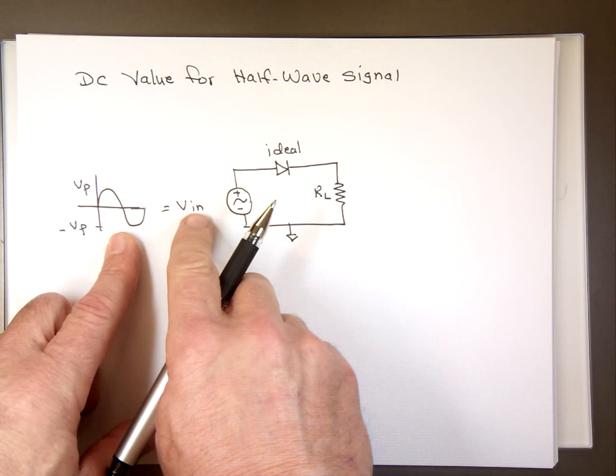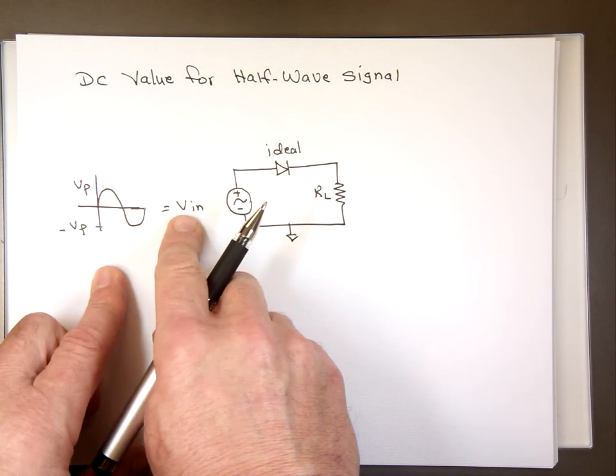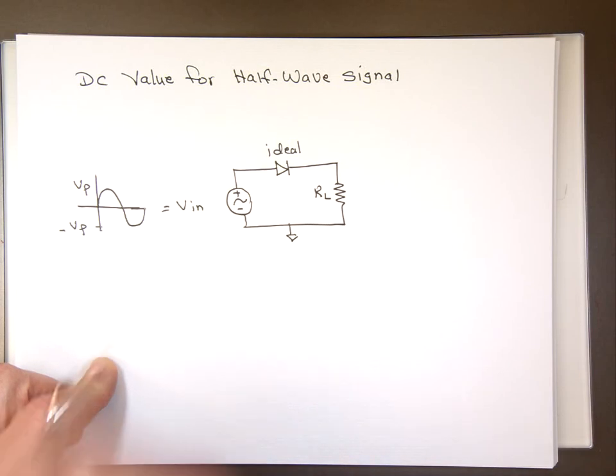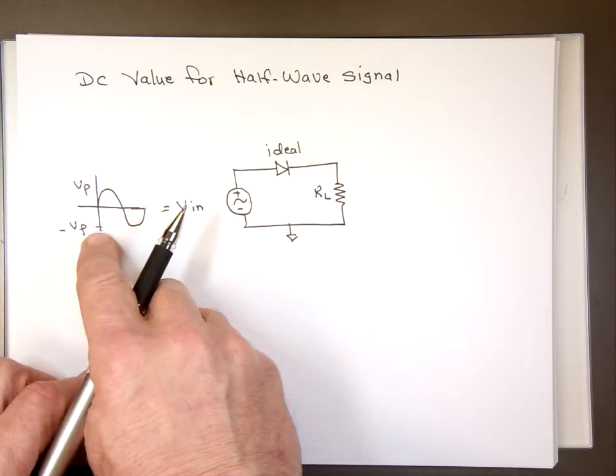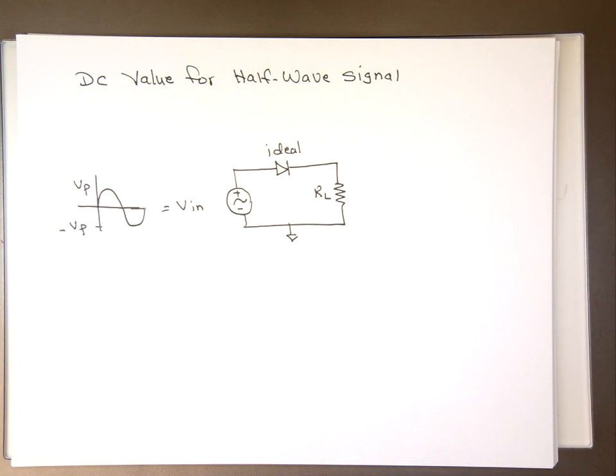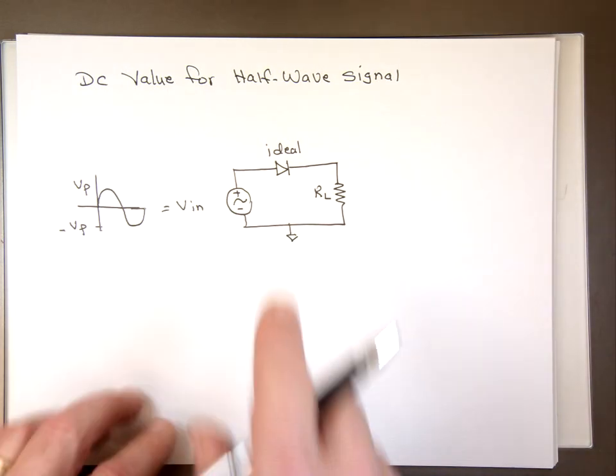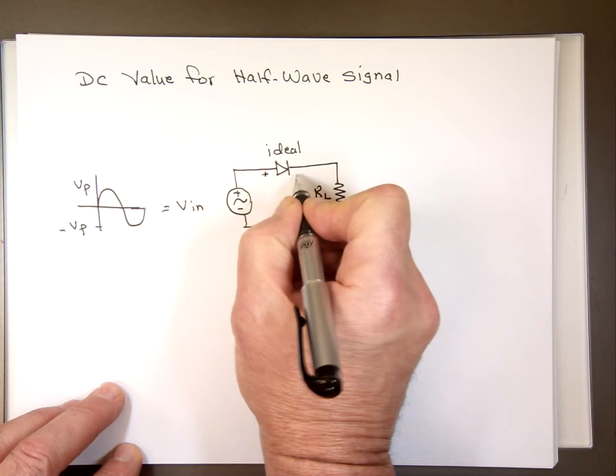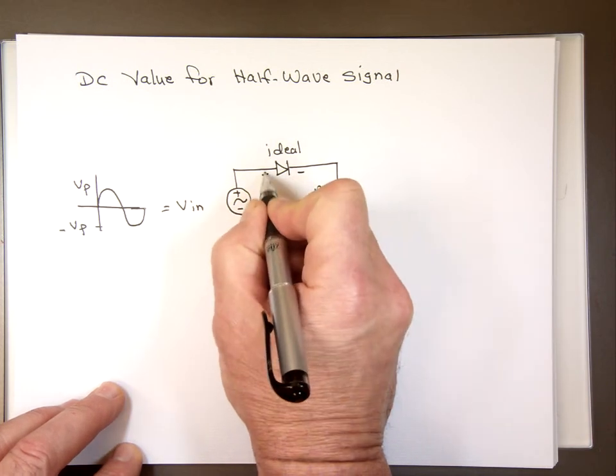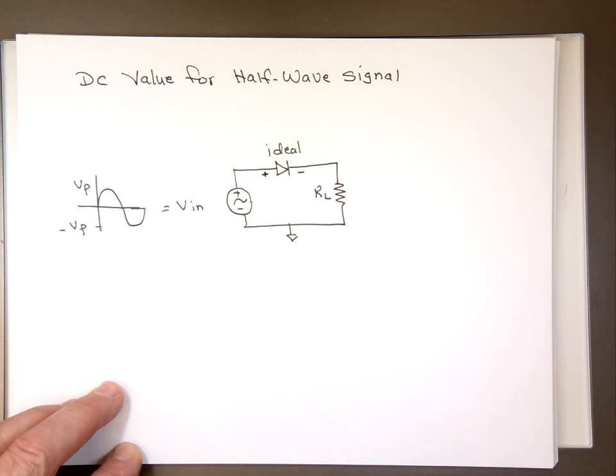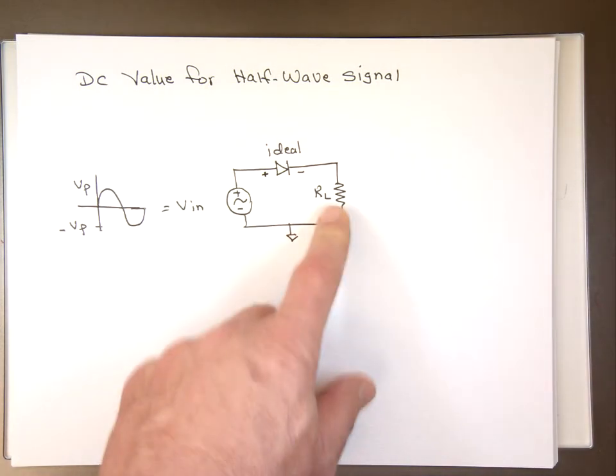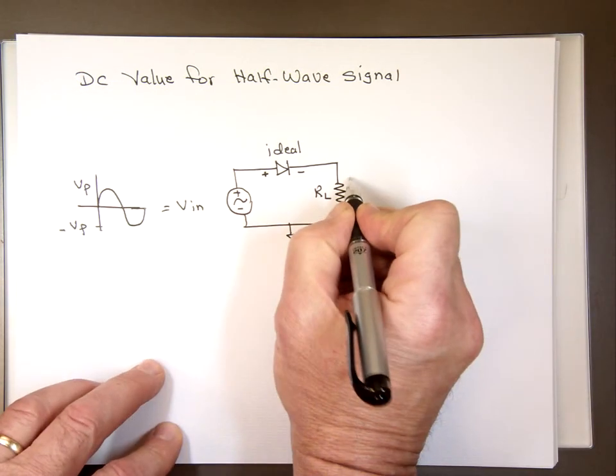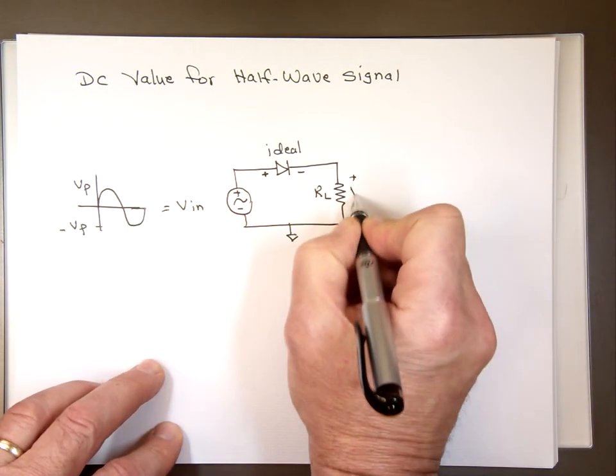Let's assume we have a source, the input, it's a sine wave that has a peak value or maximum value, and it goes down to a negative V peak. Going through an ideal diode, and what does that mean ideal? We need this end to be just a hair more than zero for current to flow in that direction attached to a load resistor. We're looking for V out, the voltage across the load.